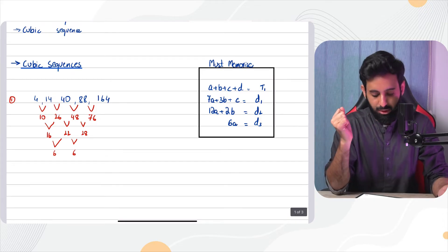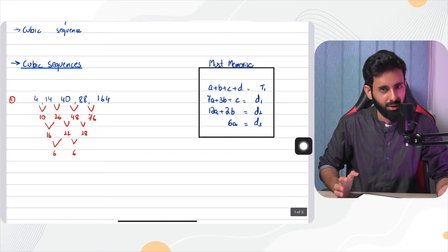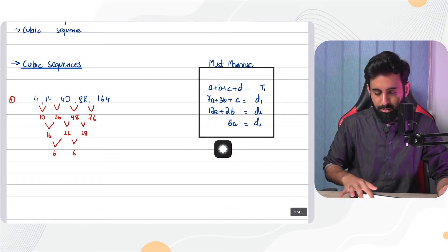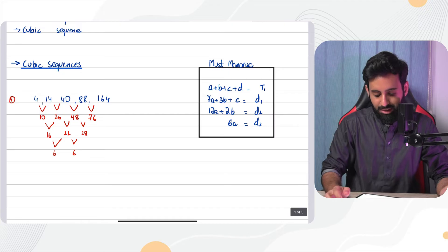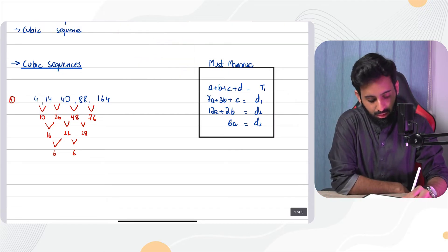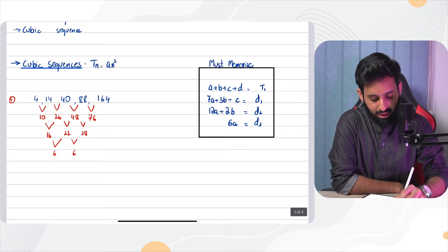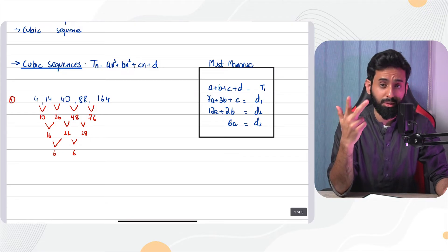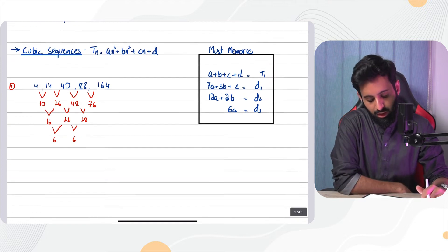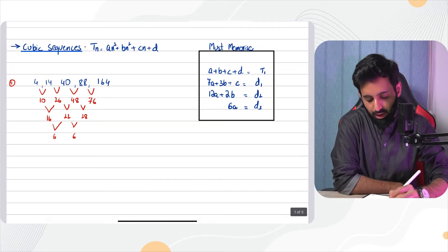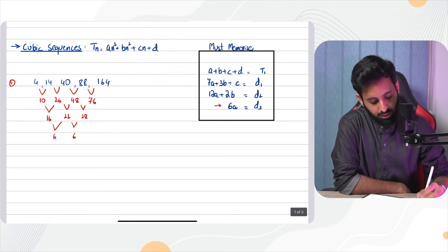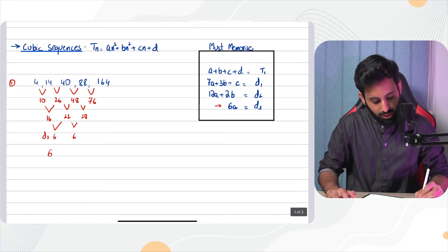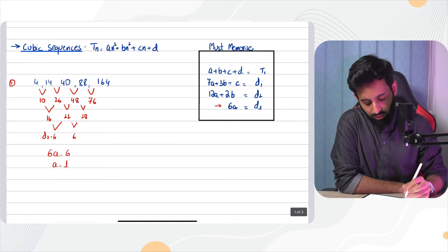Now we go a step further and find the third difference. The difference between 16 and 22 is 6, and between 22 and 28 is also 6. A constant third difference tells us this is a cubic sequence. I know I don't normally like memorizing formulas, but here you must memorize them. The general form is an³ + bn² + cn + d, and we use 6a = d3 (the third difference), so 6a = 6, meaning a = 1.